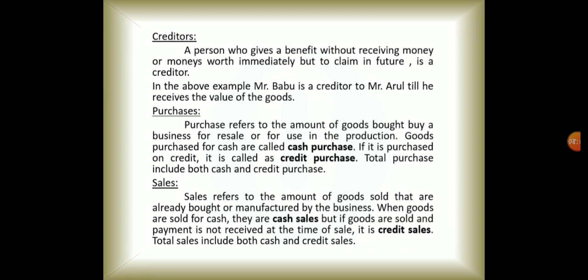The next term is the creditor. A creditor is just the opposite of a debtor. If a person has given you a benefit — if you bought something on credit without paying the money but promised to pay in the future — that is what a creditor is about. For example, if you go to a canteen and say you'll pay tomorrow, until you pay back the money you are a creditor to the canteen person.